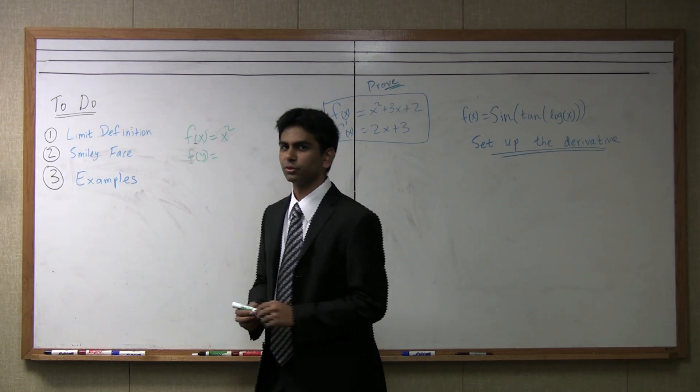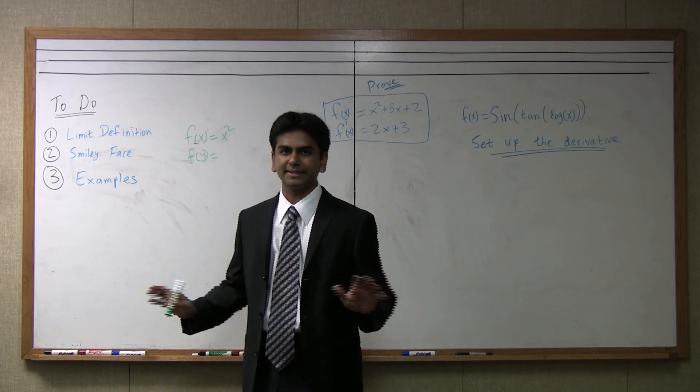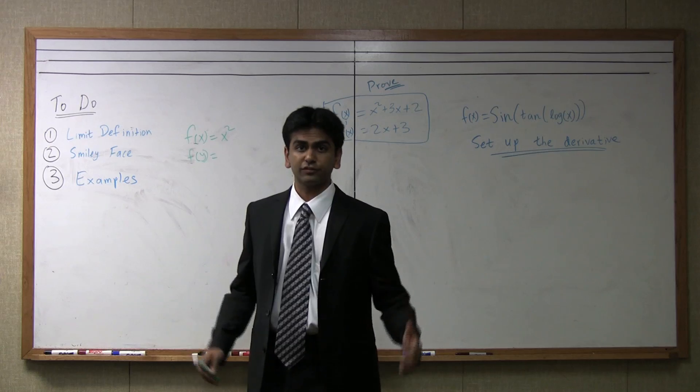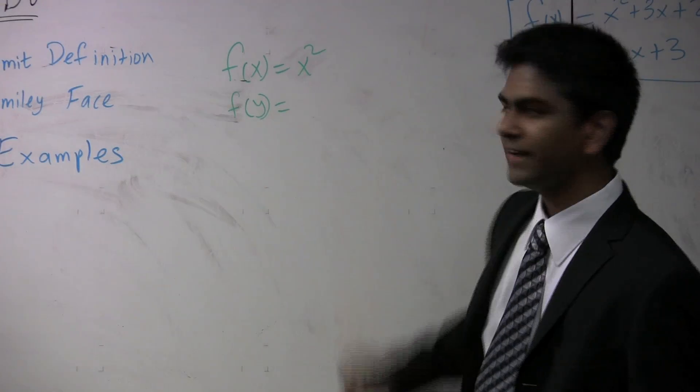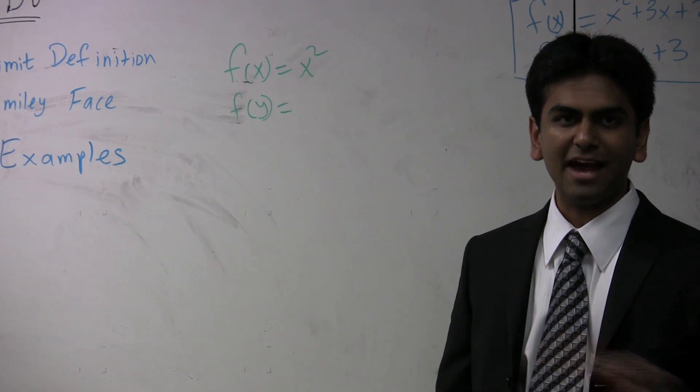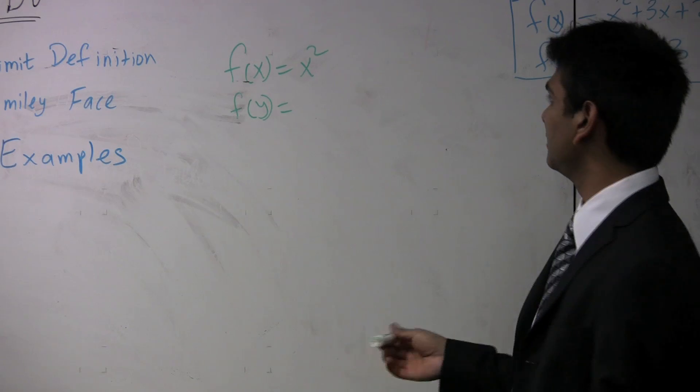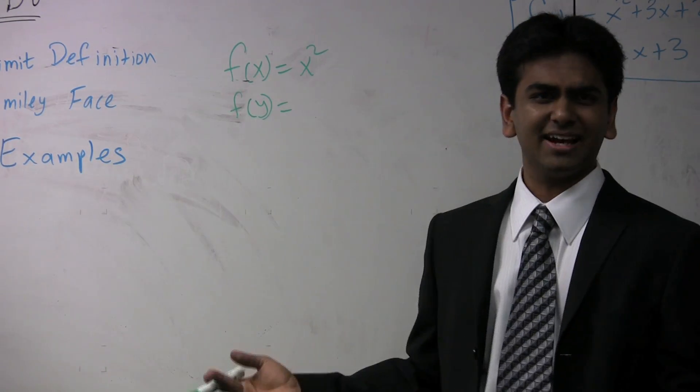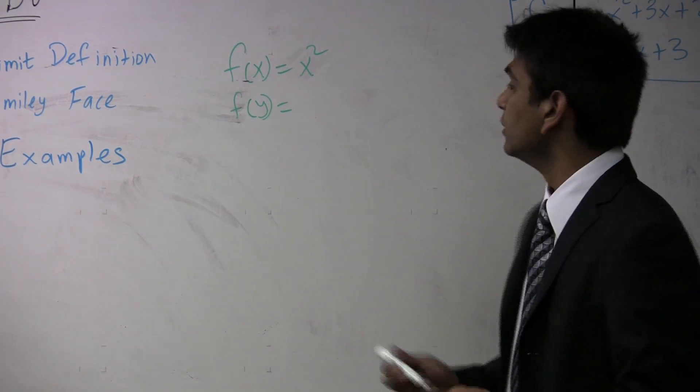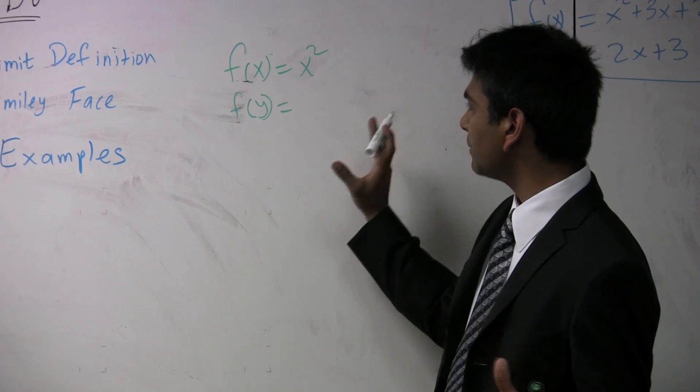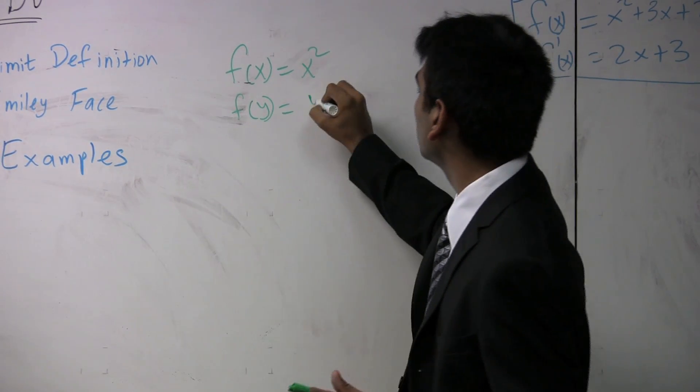So the smiley face rule is just an informal thing to keep in mind when you're confused. For example, if someone says f of x is x squared, quickly, what's f of y? Isn't y equal to x squared? No. So whenever you have a problem like this, the answer is y squared.